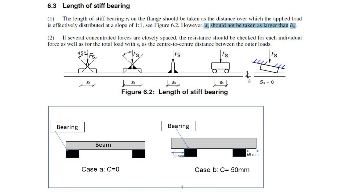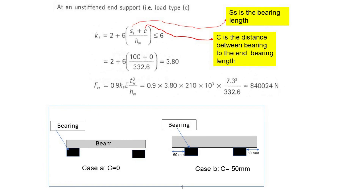The value of C is defined as shown in Figure 6.1. For example, case A and case B show two different cases to determine the C value. For case A, C equals 0, as the bearing is located at each end of the beam. For case B, C equals 50 mm, as there is a 50 mm gap between the bearing and the end of the beam. In this case, the length of bearing on the flange is 100 mm, thus SS equals 100 mm. Inserting the values into the equation gives F_CR equal to 840,024 N.